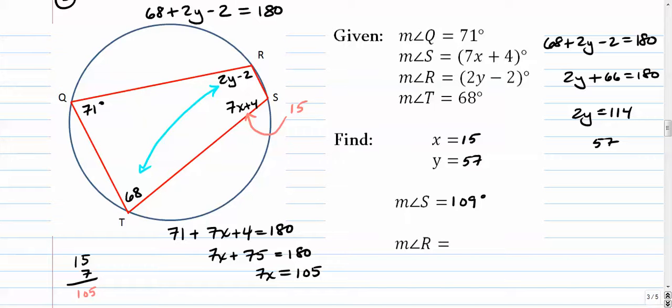So we're going to take that y value and we're going to, again, plug it back in right here. 2 times 57 is 114 minus 2. 114 minus 2 is 112. 112 plus 68 is equal to 180. So that works out nicely.